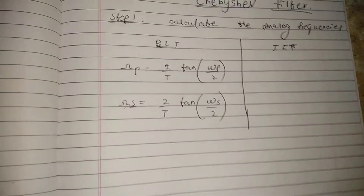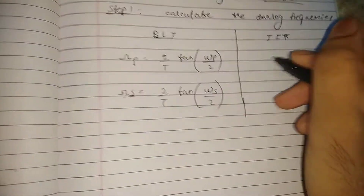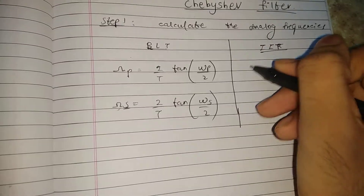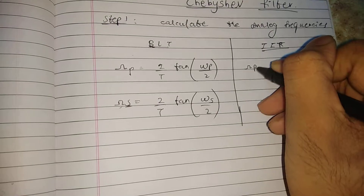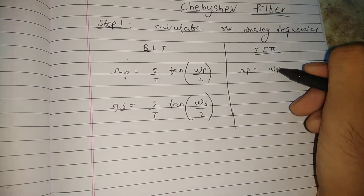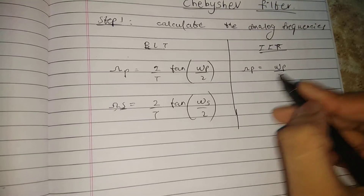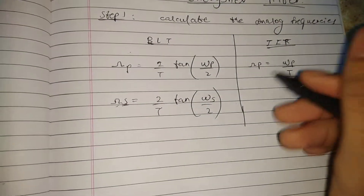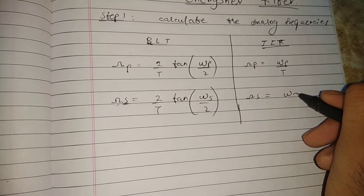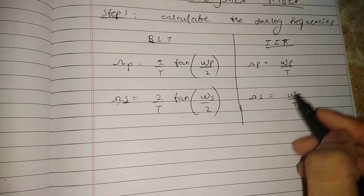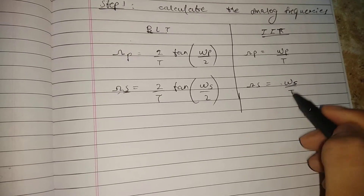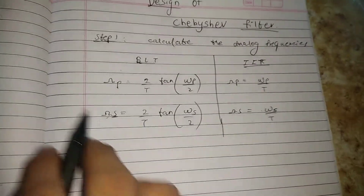For impulse invariant transformation, you write omega_p equals omega_p divided by T, where T represents the time period given in the question paper. Similarly, omega_s equals omega_s divided by T — that is the digital frequency divided by the time period. This completes step one.